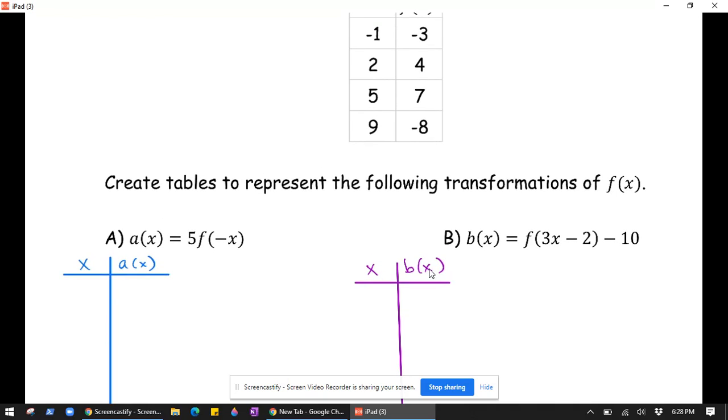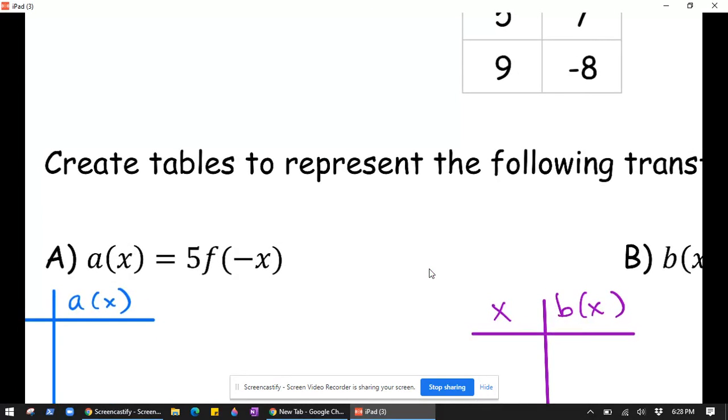Okay, so for instance I've got 5 times f of negative x. So I'm just going to note what each of those does. We know that 5 here, it's outside the function f of x, so it's going to result in a transformation on the y values.